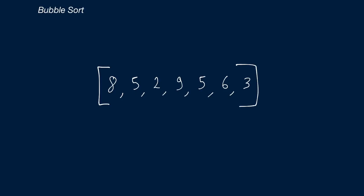More precisely, the first time we iterate through this array, we traverse through it from the start all the way to the end, and at each number we check if the current number and the number right next to it are in the correct order. In the first example, we start at 8, with 8 being our current number and 5 being the next number, and we check if these two numbers are in the correct order — is the current number smaller than or equal to the next number? If they are sorted, we just move on. But if they're not in the correct order, like 8 and 5, then we swap the numbers.